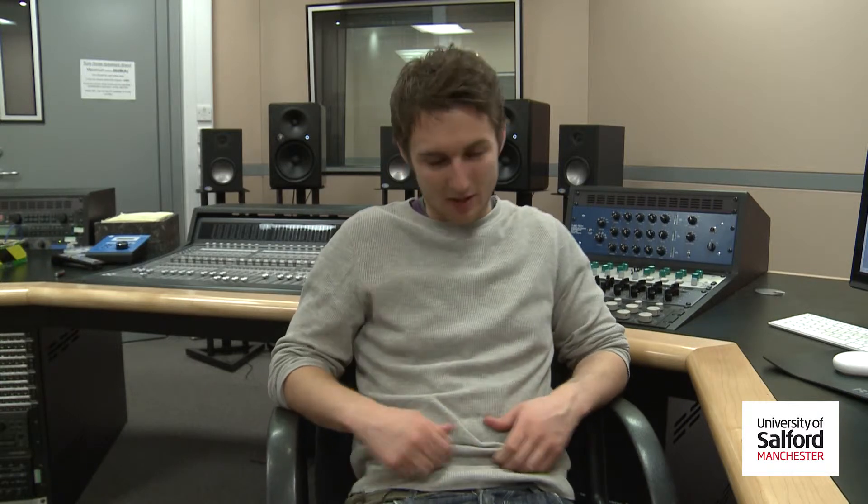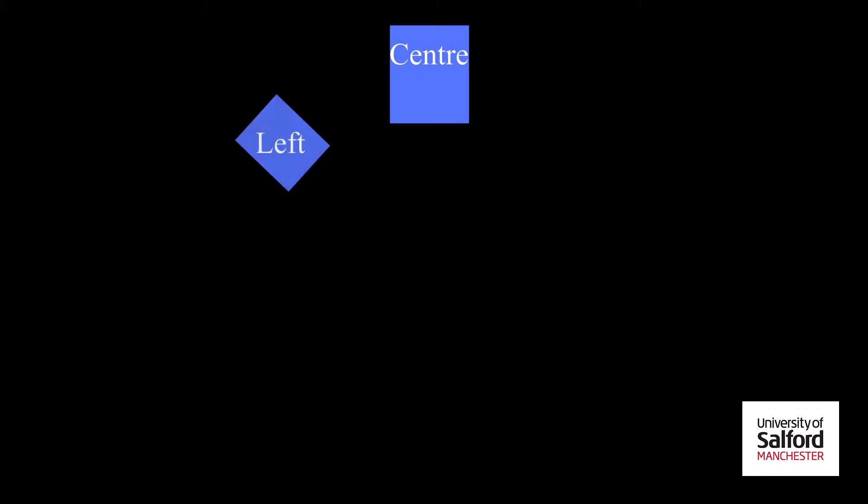Panning is essentially what makes the real difference between stereo and 5.1, in that it is the use of speakers to create phantom images. This is done through placing audio in a specific region within the surround field.